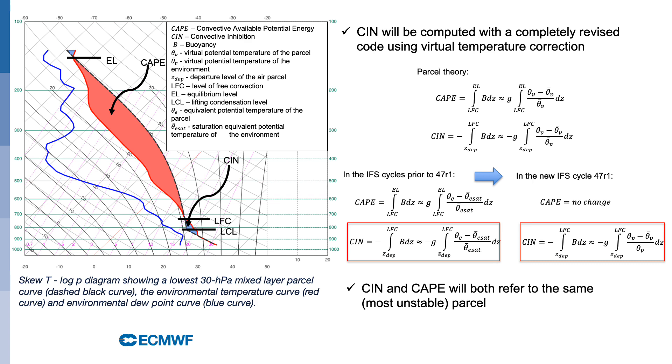In the new model cycle, both CAPE and CIN refer to the same most unstable parcel which improves their usability for diagnosing deep moist convection.